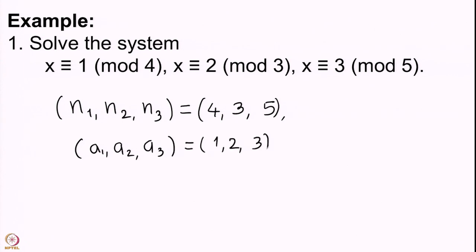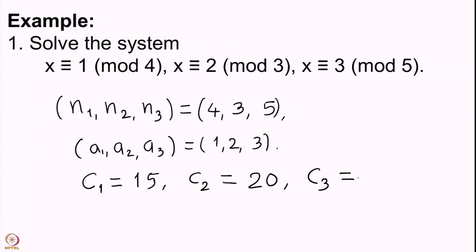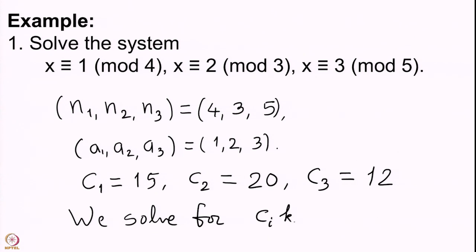Recalling the proof, we compute c1, c2, c3. c1 = n2·n3 = 3·5 = 15; c2 = n1·n3 = 4·5 = 20; c3 = n1·n2 = 4·3 = 12. We observe that 4 and 15 are co-prime, 3 and 20 are co-prime, and 5 and 12 are co-prime. We now solve ci·ki ≡ 1 mod ni for each i.